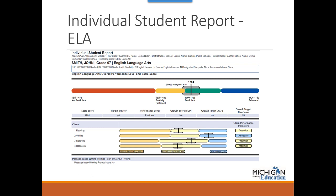The third section has detailed information on claim performance. The claim performance indicator bar shows how the student performed on the claim relative to the range of possible performance on that claim. In this example, the student earned attention for the reading claim, adequate for writing, and attention for both the listening and research claims. Claim performance indicators are used only for English language arts and mathematics because they are computer adaptive tests; raw score data is not a valid representation of student achievement on a computer adaptive test. Below the claims area on ELA reports only, the student's passage-based writing prompt raw score is displayed — this sample student earned 4 out of 4 points possible.